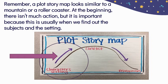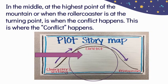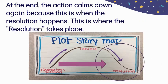Remember, a plot story map looks similar to a mountain or a roller coaster. At the beginning, there isn't much action, but it is important because this is usually when we find out the subjects and the setting. In the middle, at the highest point of the mountain — or when the roller coaster is at the turning point — is where the conflict happens. At the end, the action calms down again because this is when the resolution happens.